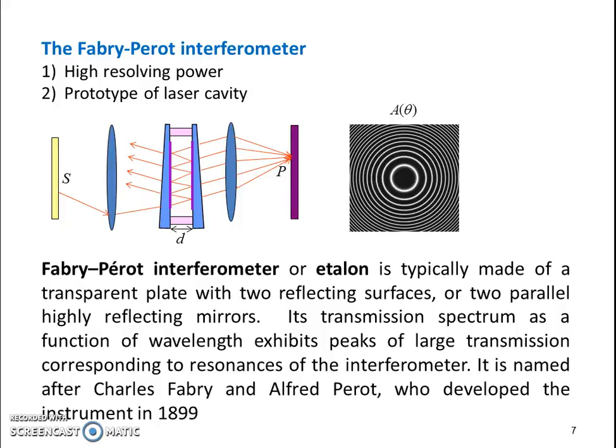Its transmission spectrum as a function of wavelength exhibits peaks of large transmission corresponding to resonances of the interferometer. It is named after Charles Fabry and Alfred Perot, who developed the instrument in 1899.